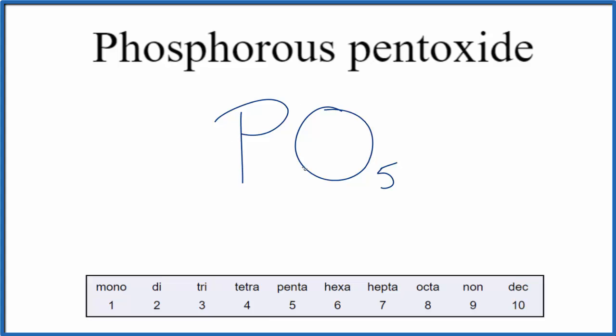That's a lot of oxygen atoms around the phosphorous. Phosphorous pentoxide is kind of special for historical reasons. So PO5, that is not the formula for phosphorous pentoxide.